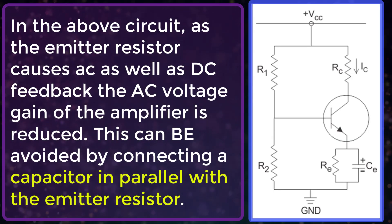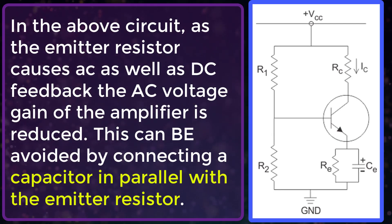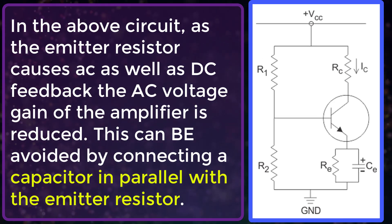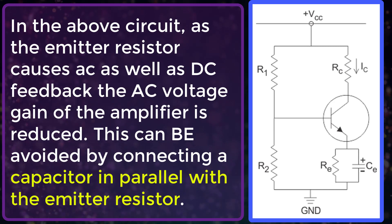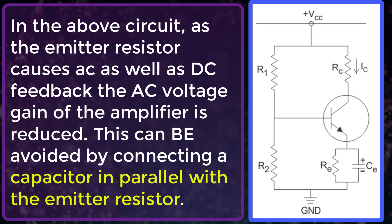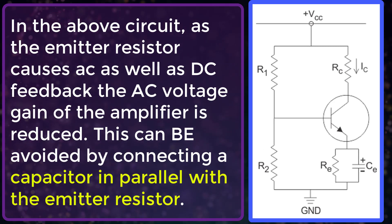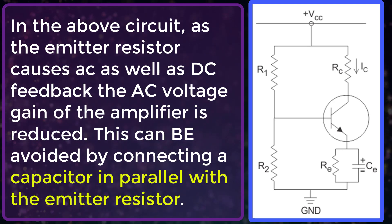As the emitter resistor causes AC as well as DC feedback, the AC voltage gain of the amplifier is reduced. This can be avoided by connecting a capacitor in parallel with the emitter resistor, as shown.